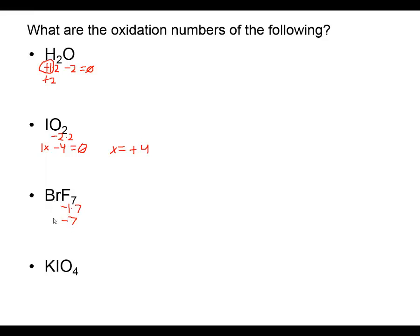With one bromine as my unknown x, and since there's no charge for this neutral molecule the overall sum should equal zero, x plus negative seven equals zero. So x must be a positive seven for the bromine oxidation number in bromine heptafluoride BrF₇.